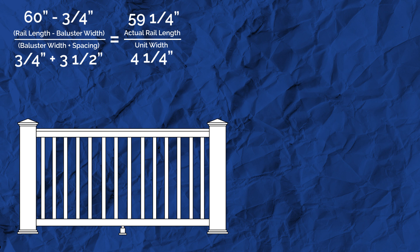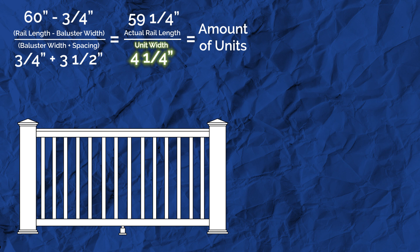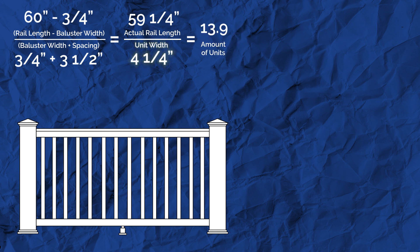Now, divide your actual rail length by your unit width. For us, we have an actual rail length of 59 and a quarter inches. We'll divide that by our unit width of four and a quarter inches to give us 13.9.